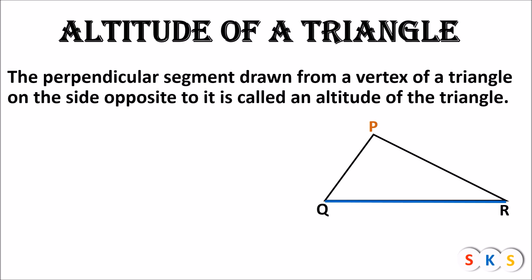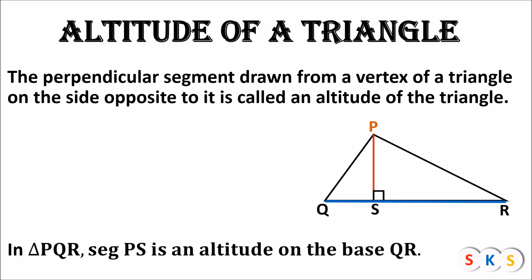I am going to make a perpendicular segment from P to the opposite side QR. You can see that this segment is perpendicular. We'll name it seg PS. So seg PS is a perpendicular segment, and this segment is called the altitude of triangle PQR. In triangle PQR, seg PS is an altitude on the base QR.